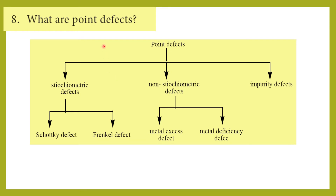What are point defects? Point defects involve the missing or misplaced ions at lattice positions. They are classified into three types: stoichiometric defects, non-stoichiometric defects, and impurity defects. Stoichiometric defects include Schottky defect and Frenkel defect. Non-stoichiometric defects include metal excess defect and metal deficiency defect.